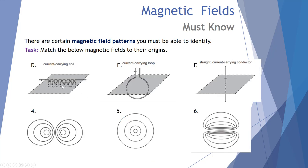Now match D, E, and F to magnetic field lines 4, 5, and 6. A current-carrying coil generates a pattern with magnetic fields going through and circling back — that's pattern 6. A current-carrying loop generates two circular patterns around the bases — pattern 4. A current going straight through a wire generates concentric circles — pattern 5. Familiarise yourself with these as they have come up in exams.